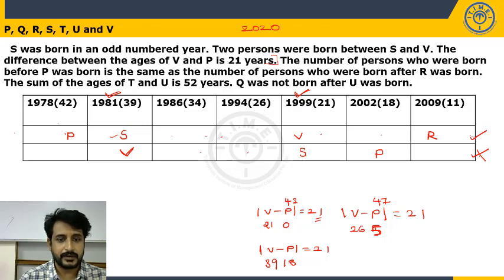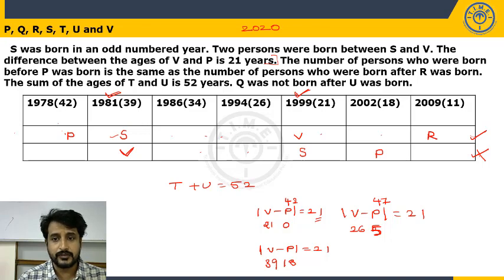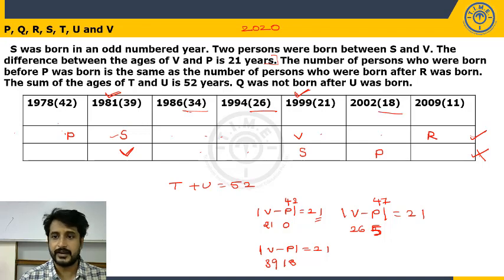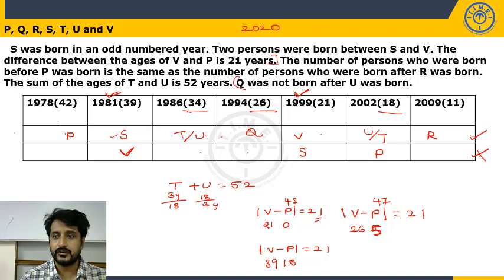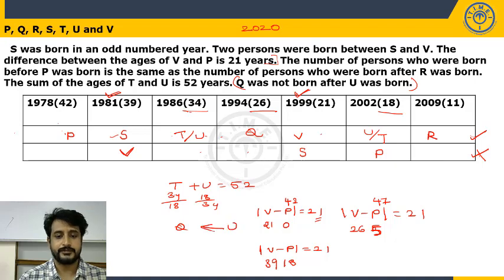Next clue: T + U = 52 years. The remaining ages are 34, 26, and 18. Since 34 + 18 = 52, T and U have ages 34 and 18 (in some order), and Q = 26. Final clue: Q was not born after U, meaning Q was born before U. So Q comes before U in the timeline. This means Q = 26 (born 1994), U = 18 (born 2002), and T = 34 (born 1986). T was born in 1986.